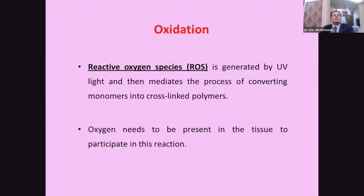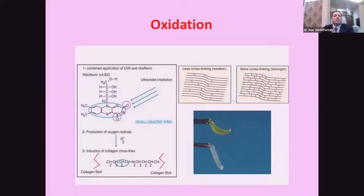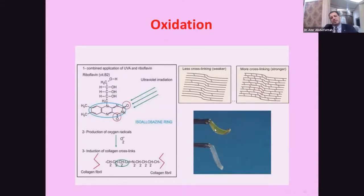In oxidation, we have free radicals called reactive oxygen species, generated by ultraviolet light. This mediates a process of converting monomers into cross-linked polymers; oxygen needs to be present in large amounts. As we see in this diagram, ultraviolet radiation activates riboflavin to produce reactive oxygen species or oxygen radicals, which help cross-link collagen fibers with other collagen fibers. The yellow fibers shown are cross-linked and more rigid, while the white ones are not cross-linked and more flaccid.